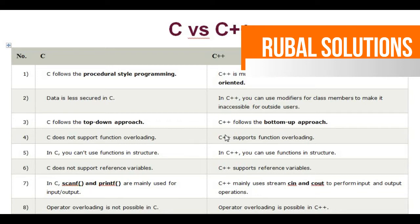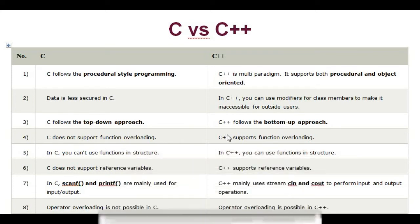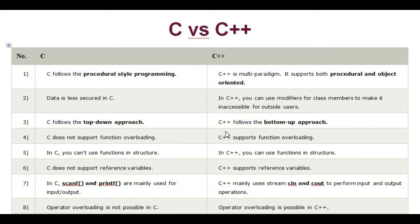Number two: Data is less secured in C. In C++, you can use modifiers for class members to make it inaccessible for outside users.